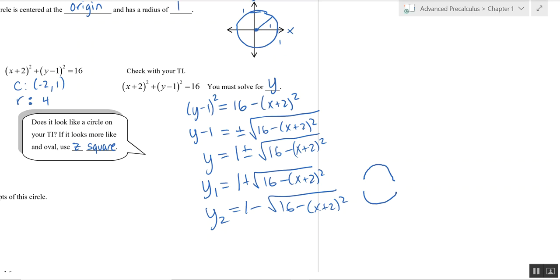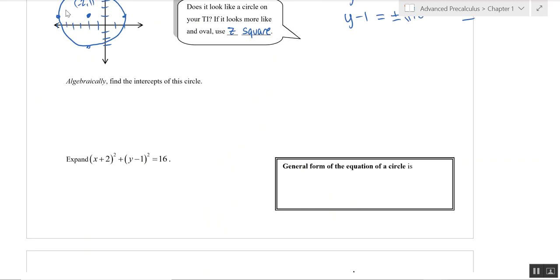Now, if I had solved instead for X instead of Y, I would have had the left side of the circle and the right side of the circle. So make sure you know that, something will come up this year a few times. Alright, let's take a look at the intercepts of this circle.